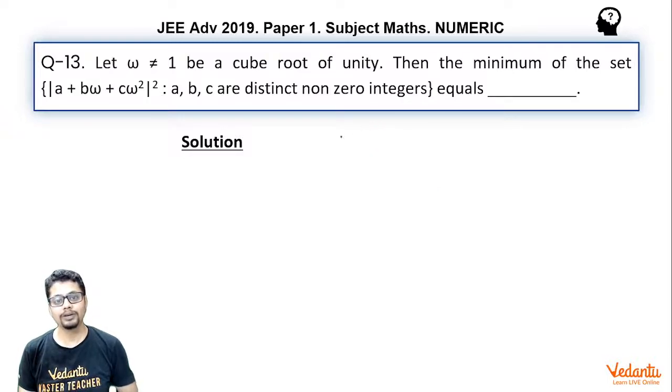So basically we have been asked to find the minimum value of this expression |a + bω + cω²|² given that omega is not equal to 1 and it is a cube root of unity. So that means it is an imaginary cube root of unity.